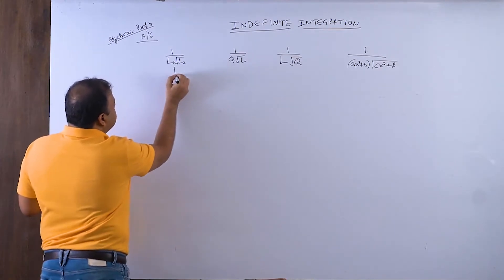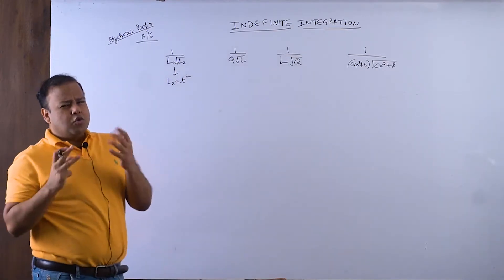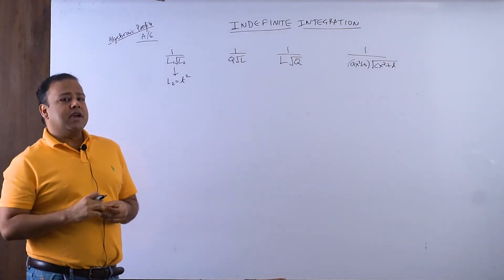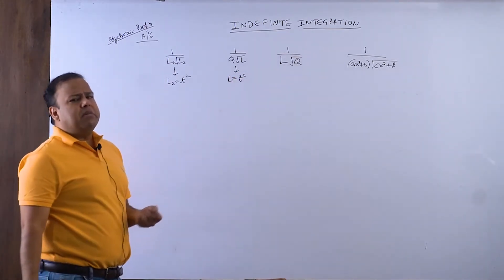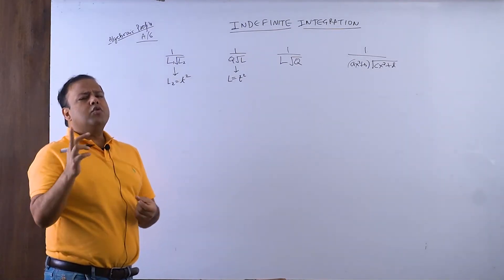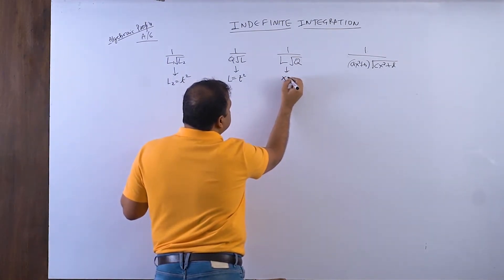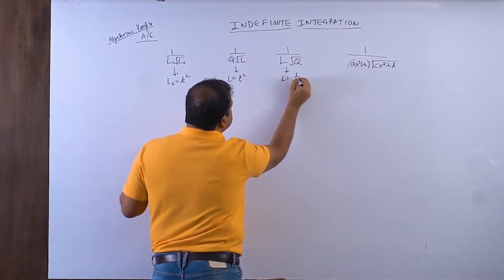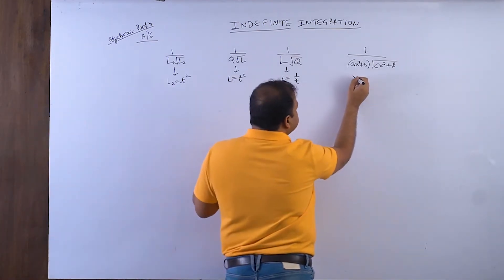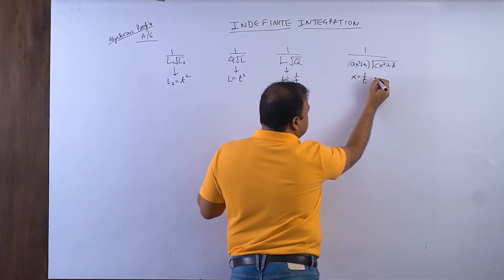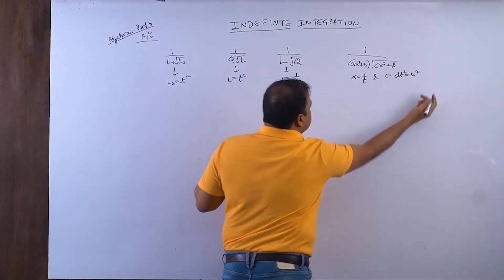Now let me tell you how to solve each of these four profiles. In the first case, 1/(L1·√L2): substitute L2 = t², so the root disappears and everything gets set. In the second case, 1/(L·√L) with two linears: substitute L = t². In the third case, 1/(L·√Q): substitute L = 1/t. In the fourth case: first put x = 1/t, then the expression inside the root becomes c + dt², which we then substitute as u².